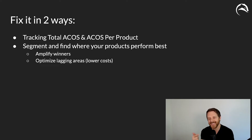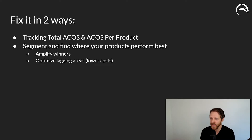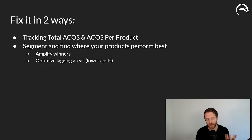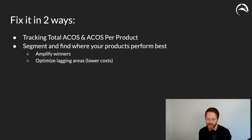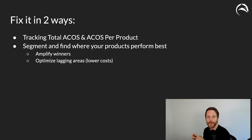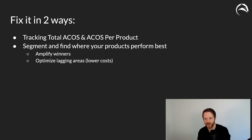Instead, go in and see where that product is doing well. That 15% total ACOS product probably has some ad groups at 20% total ACOS and others at 5–6% total ACOS. Amplify the winners and strategically lower costs on the lagging areas. Being able to track total ACOS and ACOS per product, and then see where it's performing well or poorly, is massive.